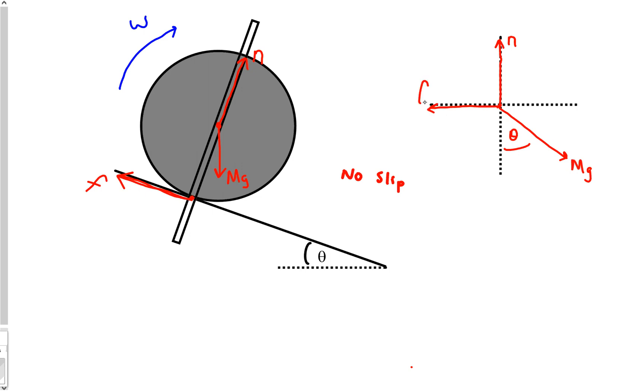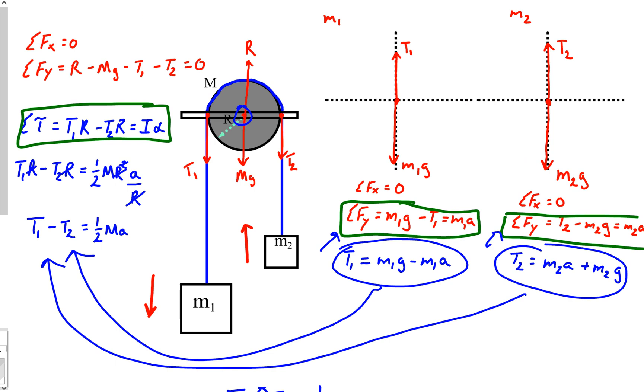So let's go ahead and do our sum of the forces on this problem. Our sum of the forces in x would be equal to mg - now it's this component that's actually making it move - so we'll say mg sin θ minus our frictional force, and that's equal to... now this is going to be different in the last two problems that we actually worked on.